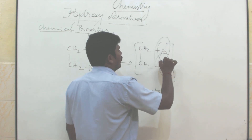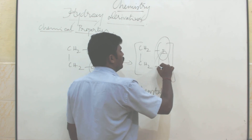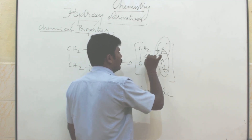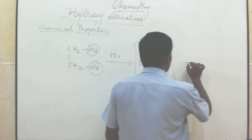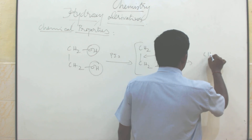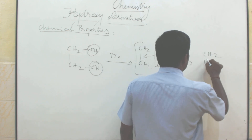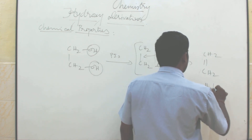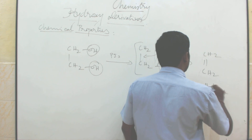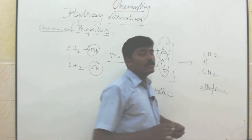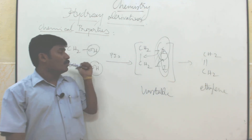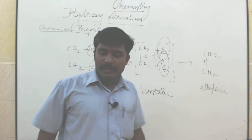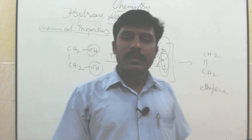Finally, what will happen? This bond will break to remove iodine, and the electrons come to form a double bond — CH2 double bond CH2, namely ethylene. This is a very important question: how to convert ethylene glycol to ethylene.